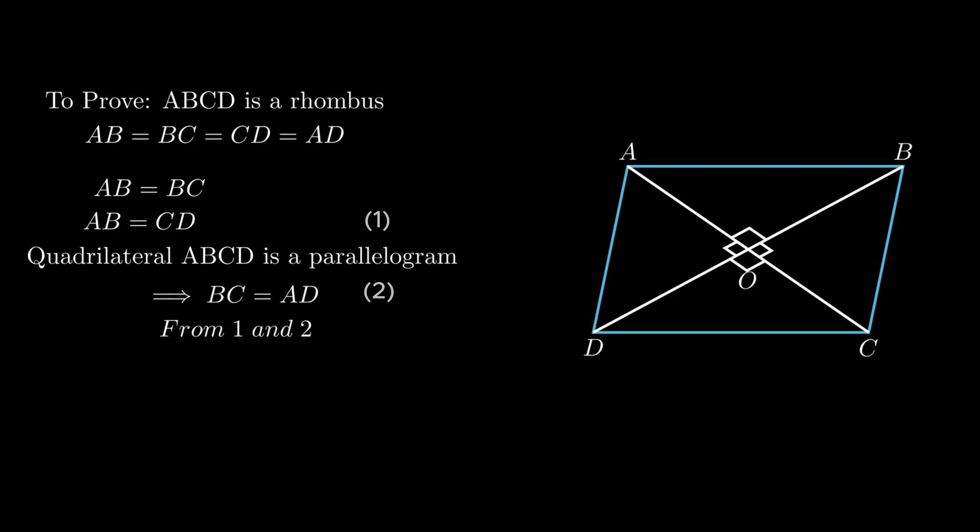Therefore, from equations 1 and 2, we conclude side AB is equal to side AD. Since all sides of quadrilateral ABCD are proved equal, therefore ABCD is a rhombus.